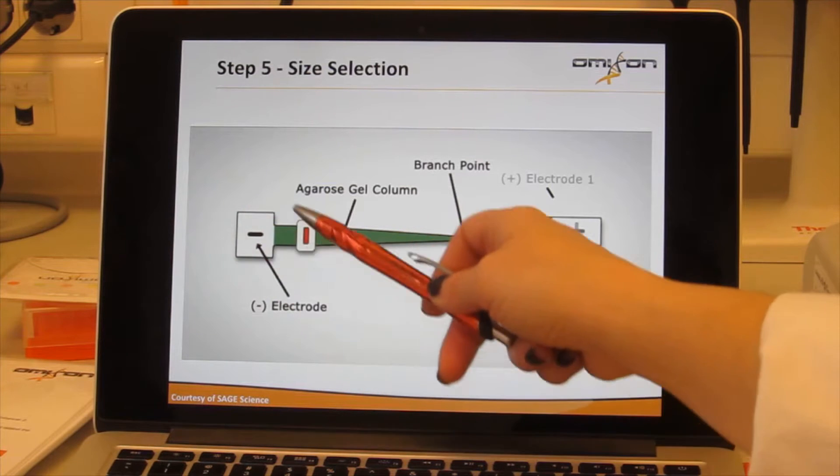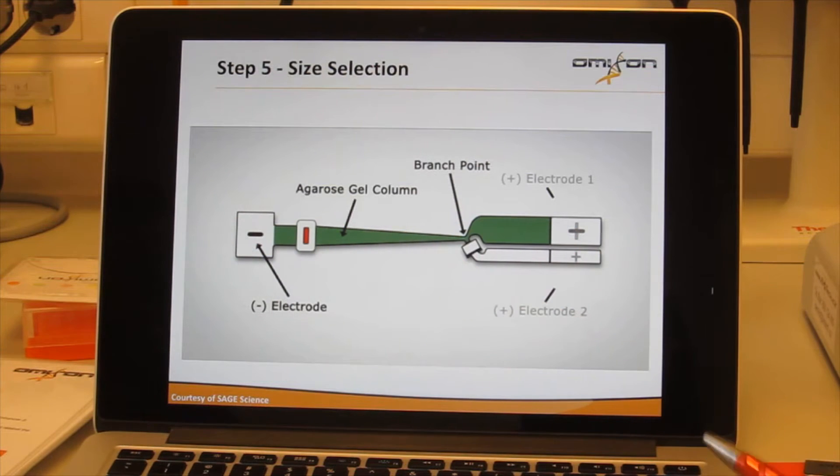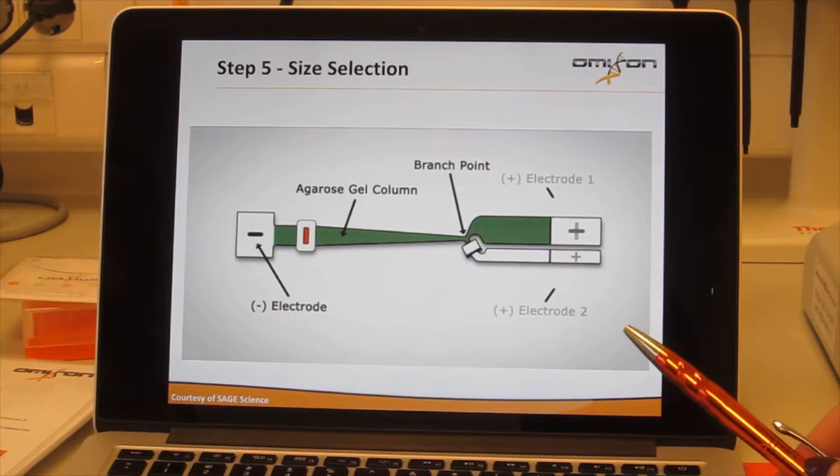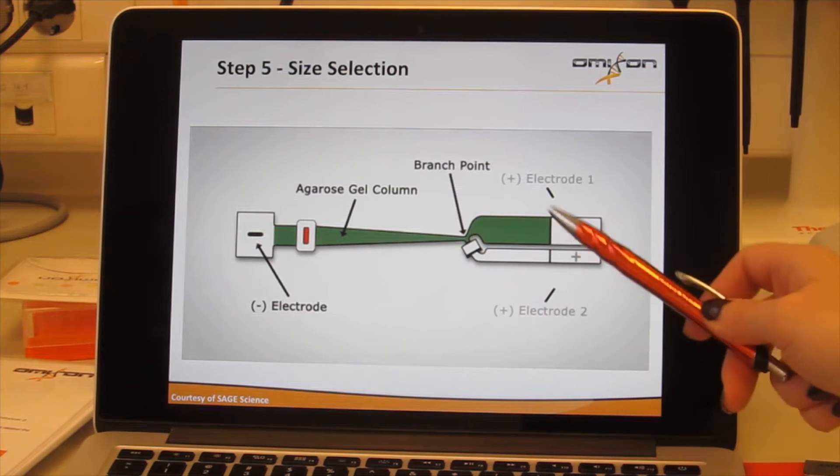There is a port for the negative electrode on one side and two ports for positive electrodes on the other side. Note how on one of the branches there is no agarose gel. Only on the top one there is one.